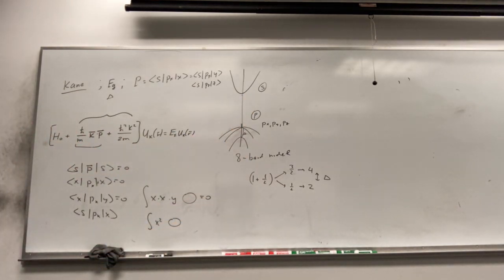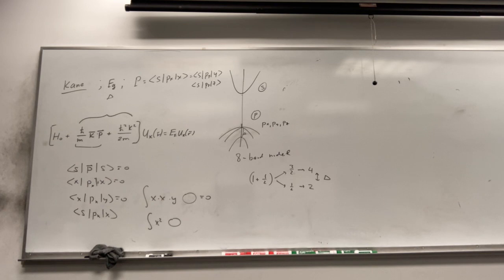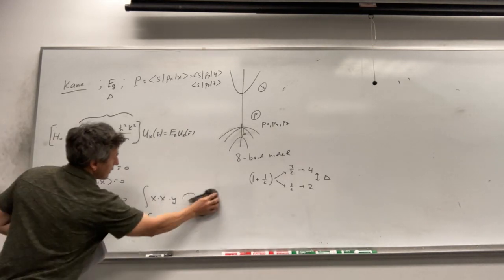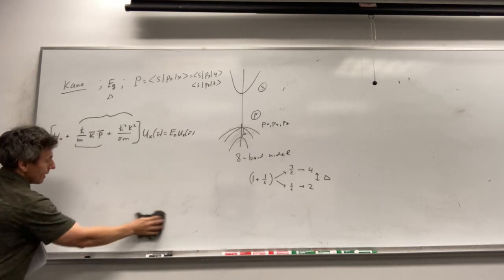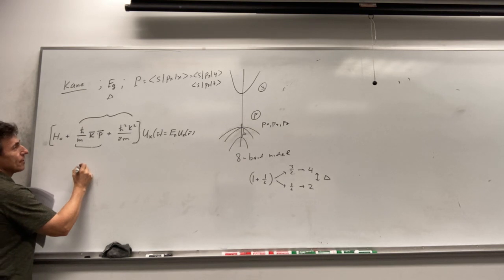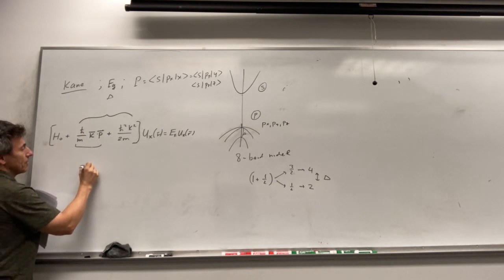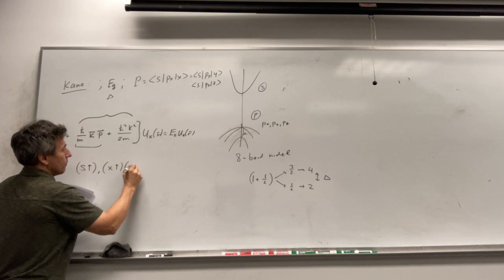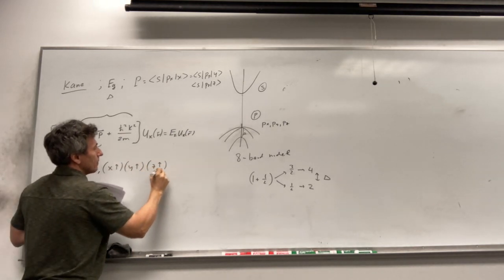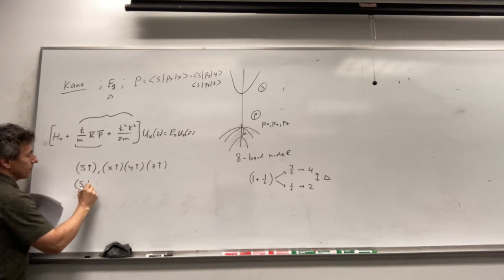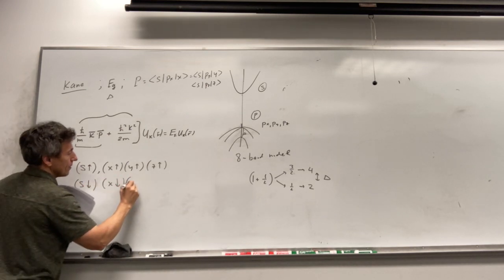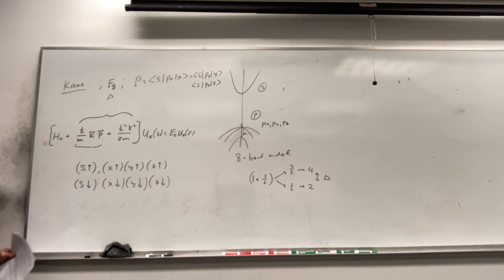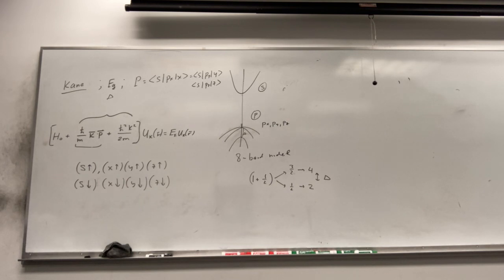So effectively we have eight bands in this approach. To write down the Hamiltonian, we need to introduce the corresponding basis. At K equals zero the set of states is: S orbital spin-up, X orbital spin-up, Y orbital spin-up, Z orbital spin-up (valence band), then S orbital spin-down, X orbital spin-down, Y orbital spin-down, and Z orbital spin-down — eight states total.